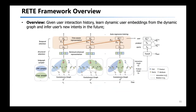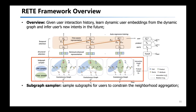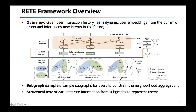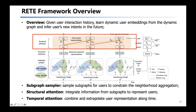Generally speaking, given the user interaction history towards both query and product, RATI can learn dynamic user embeddings from the dynamic graph and infer the user's new intents in the future. To overcome the two challenges, there are three modules in our framework: first, a subgraph sampler, which aims to sample subgraphs for each user to constrain the range of neighborhood aggregation; second, a structural attention, which integrates information from the sampled subgraph to represent the user's intents; and third, a temporal attention module, proposed to automatically combine and extrapolate user representations along time.